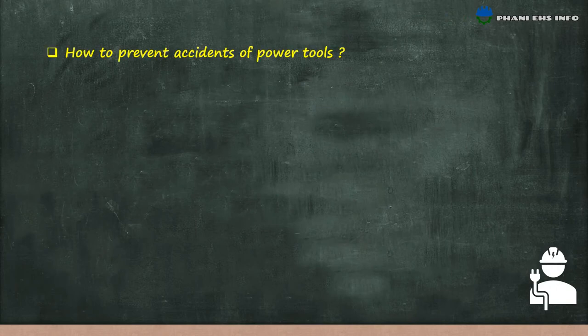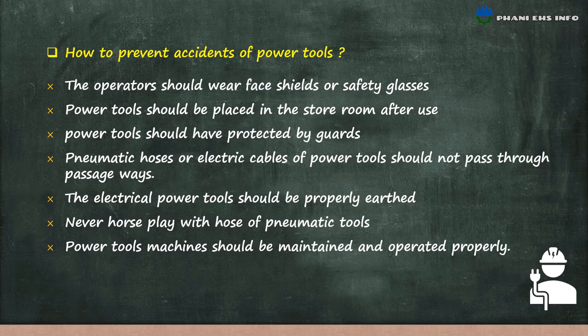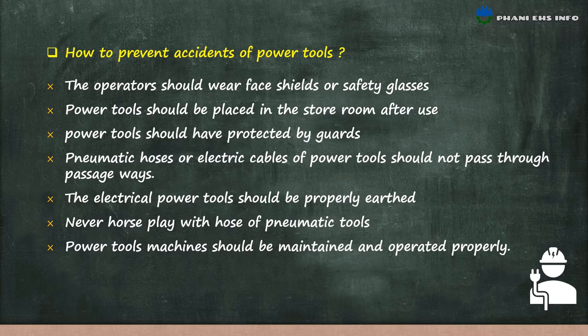How to prevent accidents with power tools? The operator should wear a face shield or safety glasses. Power tools should be placed in the store room after use and should be protected by guards. Pneumatic hoses or electrical cables of power tools should not pass through passageways. Electrical power tools should be properly earthed. Never horseplay with hose or pneumatic tools. Power tool machines should be maintained and operated properly.